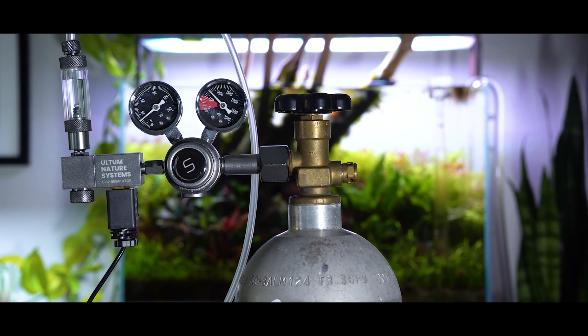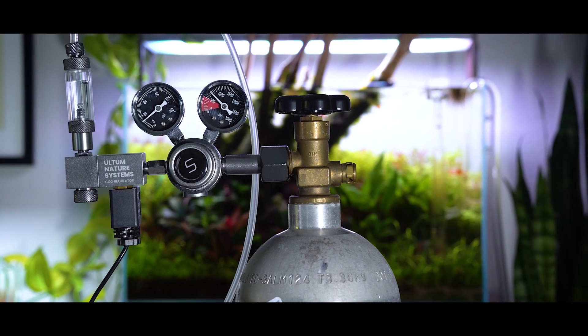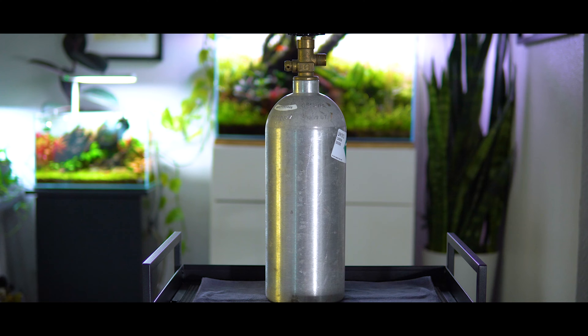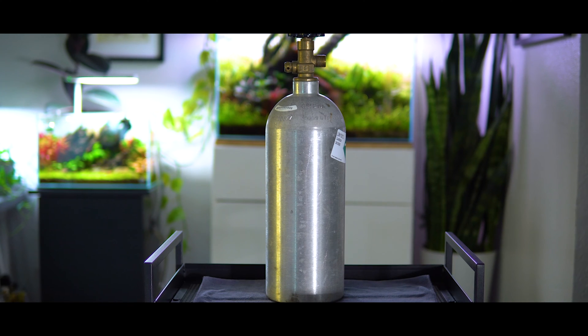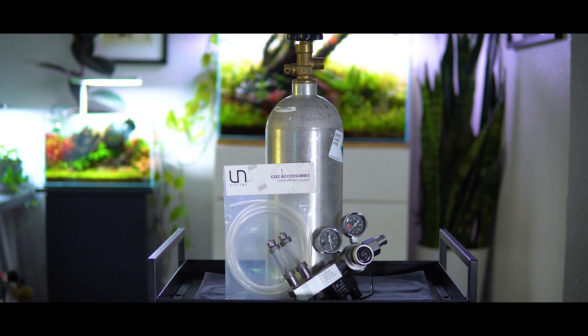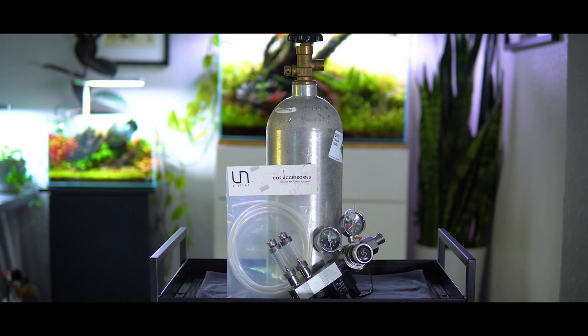In order to put together a full pressurized CO2 system, you're going to need some materials. Those materials are a pressurized CO2 cylinder that comes anywhere from five to twenty pounds, a regulator, some CO2 proof hosing, and a CO2 diffuser.